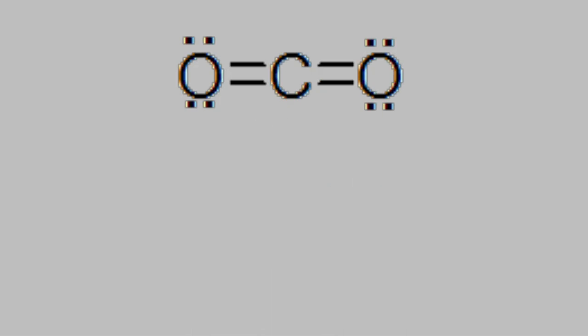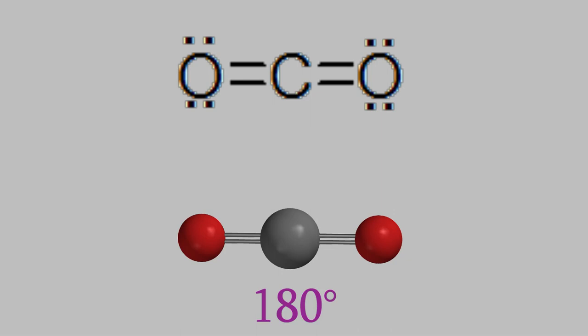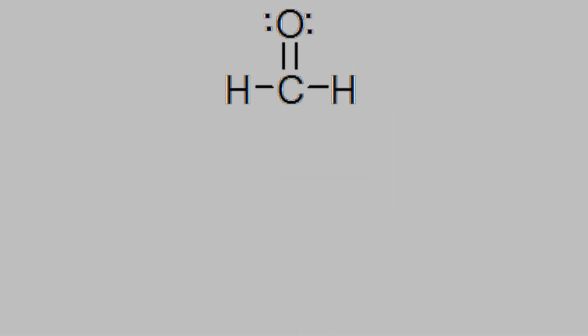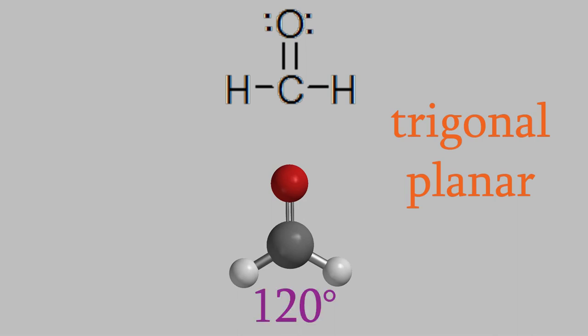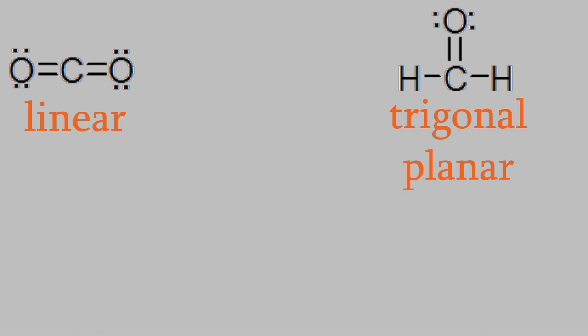For example, carbon dioxide has two bonds, and these get as far apart as possible, so they make a 180-degree angle, and we call that a linear shape. Meanwhile, formaldehyde has three bonds, which makes a trigonal planar shape with an angle of 120 degrees between the bonds. But notice that in both of these cases, the central atom didn't have any electron pairs on it. Suppose we had the molecule sulfur dioxide. Its Lewis structure shows that the sulfur has two bonds, like the carbon in carbon dioxide. But unlike the carbon, sulfur has an unshared electron pair. The unshared electrons take up space, so this won't be a linear molecule like CO2.